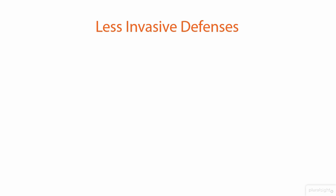In both cases, there are less invasive ways of defending against the risk. One is to slow the rate of login attempts — as there are consecutive failed attempts, the rate at which the attacker can try new passwords decreases. That doesn't lock the legitimate user out for any long period of time, but it does enormously decrease the effectiveness of the attacker.